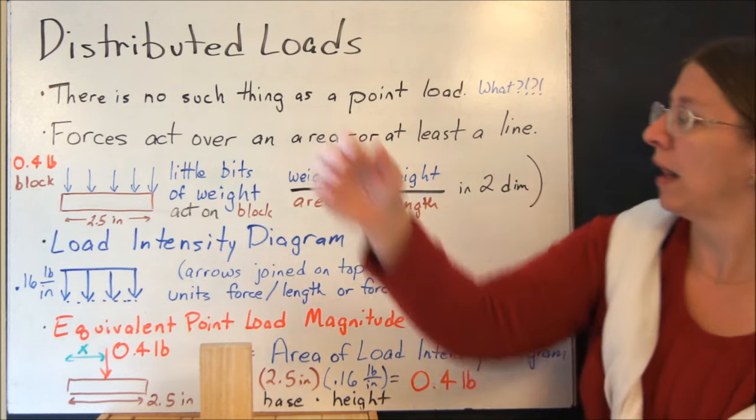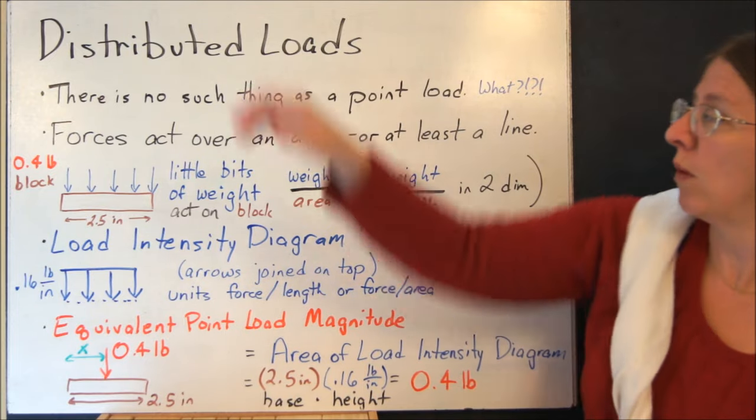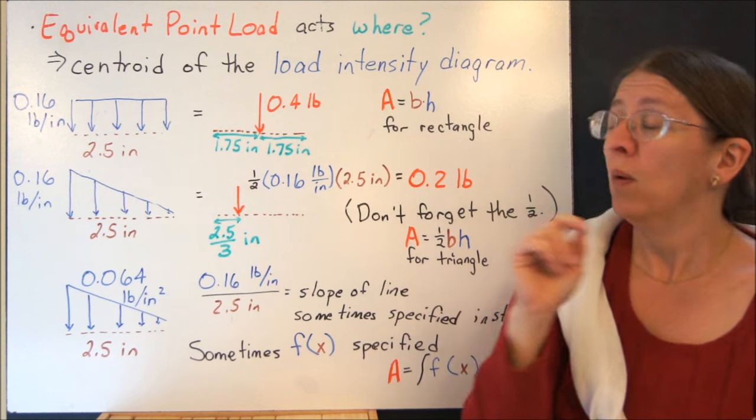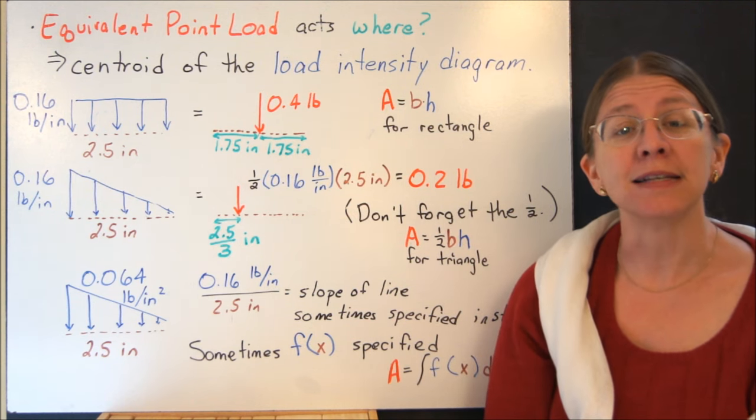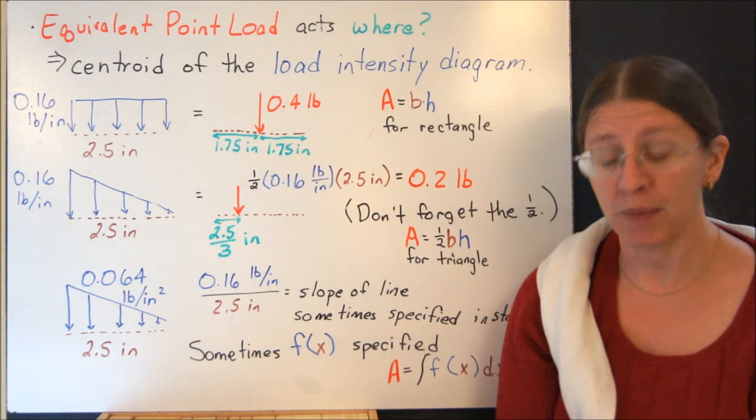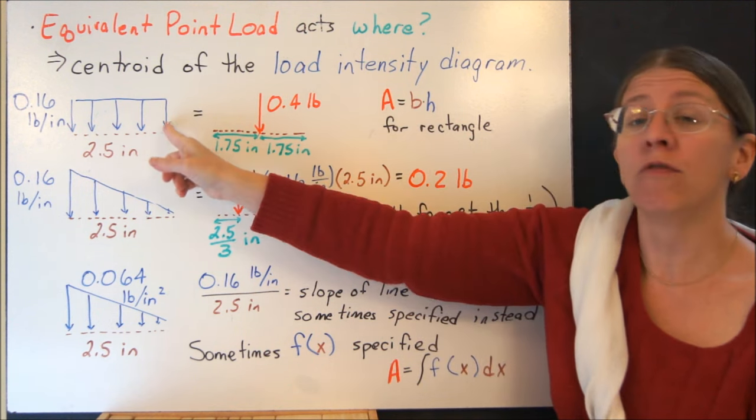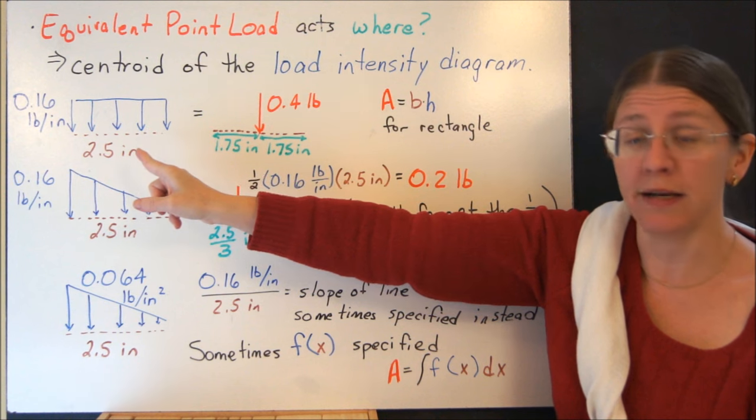We've been doing that all the way along. But what does it look like when things aren't quite so uniform and symmetric? The equivalent point load acts at the centroid of the load intensity diagram. Not the centroid of the block. The centroid of the blue load intensity diagram.